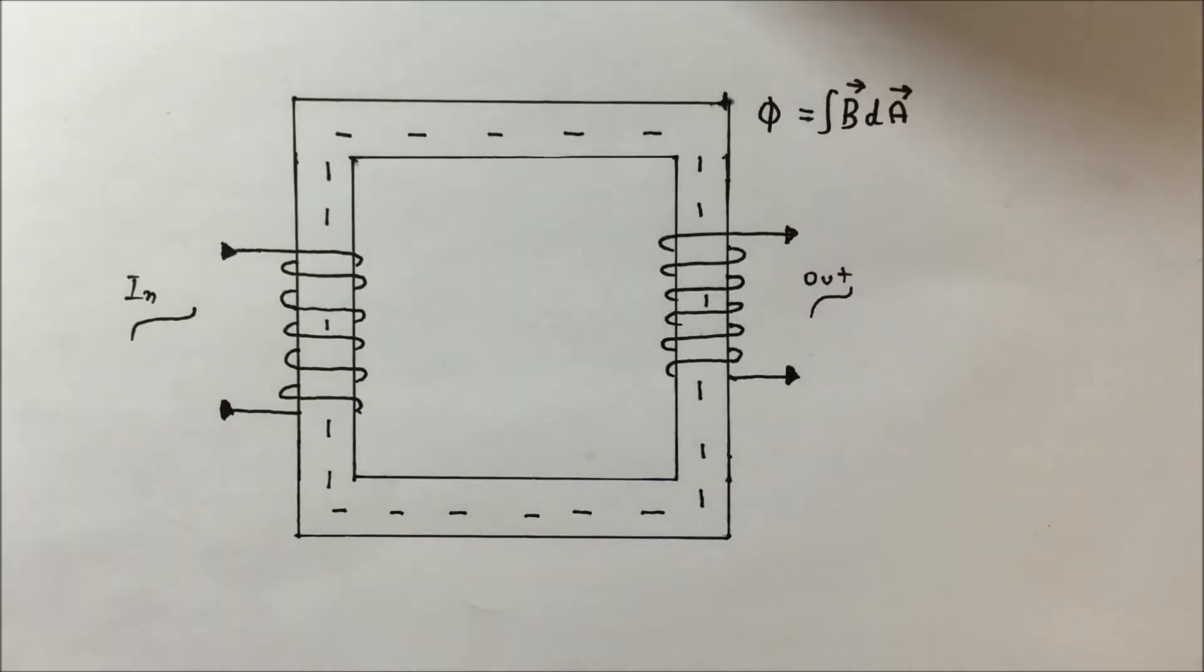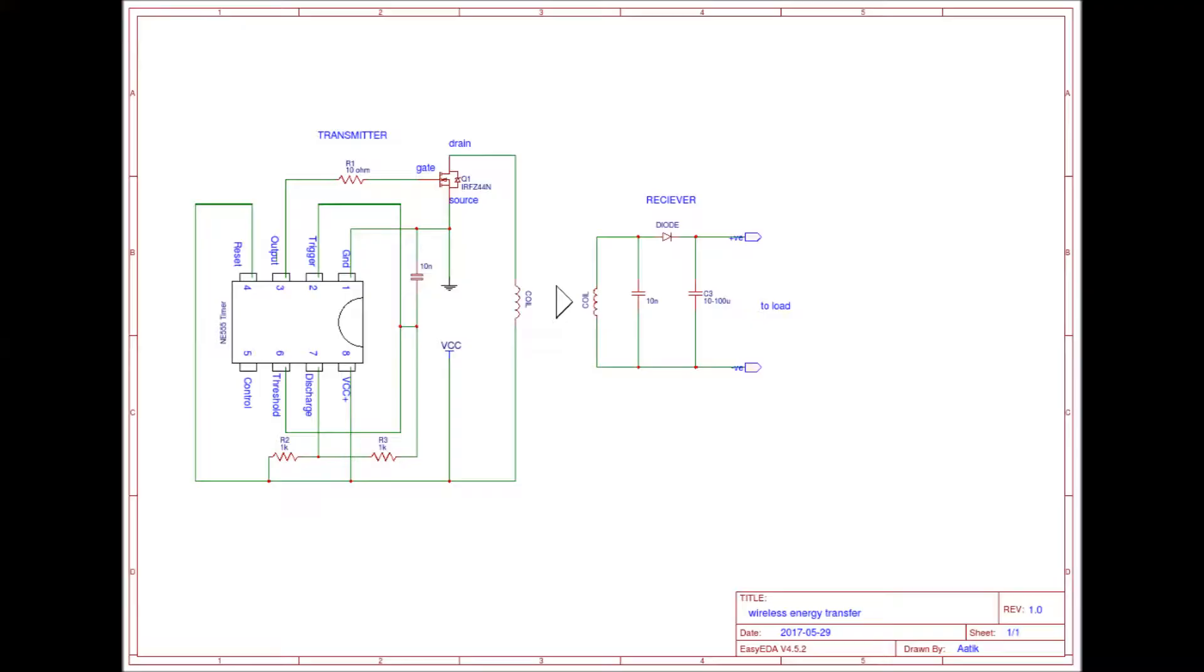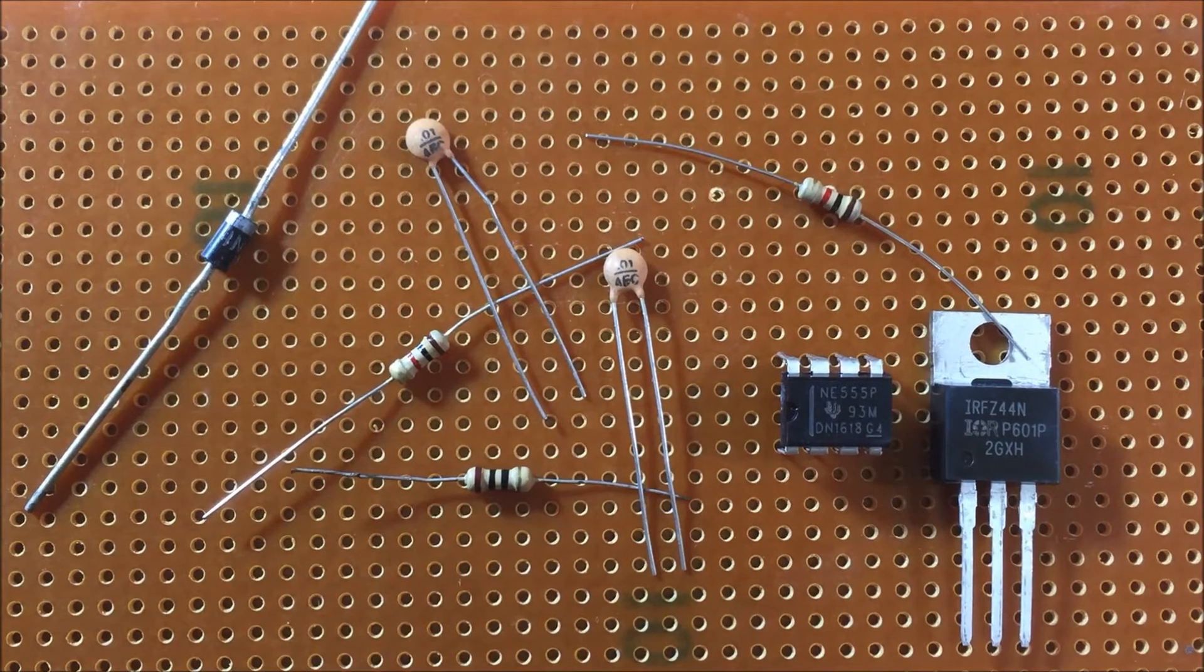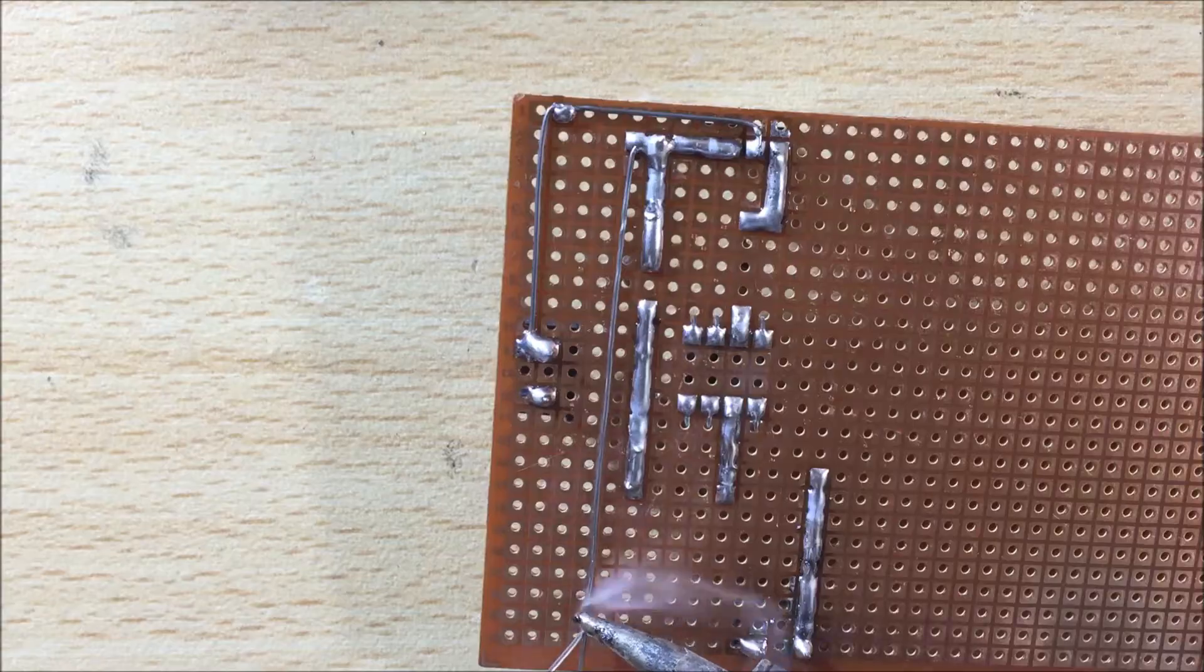So, in this video, let's create an appropriate circuit that can transfer sufficient energy wirelessly to even power big loads. For this, I have used the 555 timer IC to drive an N-channel MOSFET which is IRFZ44N.